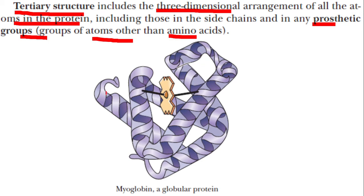What you see in this figure is myoglobin. Myoglobin is actually a single polypeptide chain, folded in a particular manner. It has a C-terminal end and an N-terminal end, and you can see the metal ion attached with it using coordinate covalent bonds. The three-dimensional arrangement of all these things together is what is called the tertiary structure. What you see here is the tertiary structure of myoglobin.